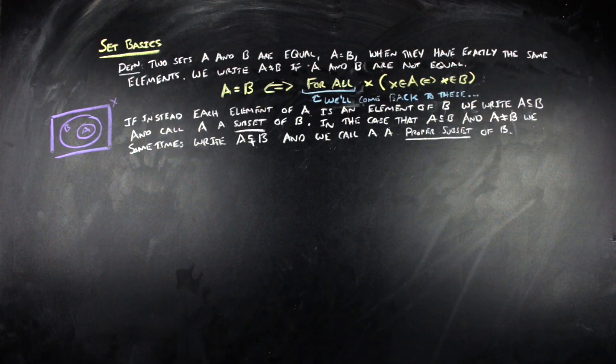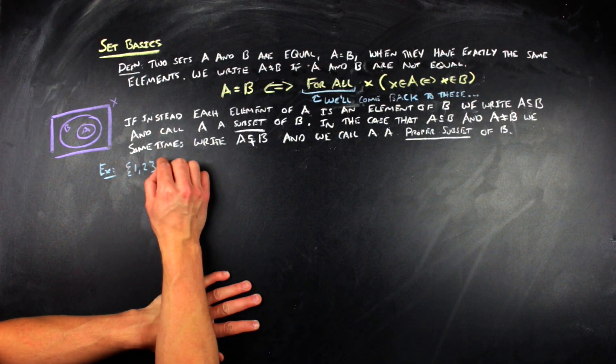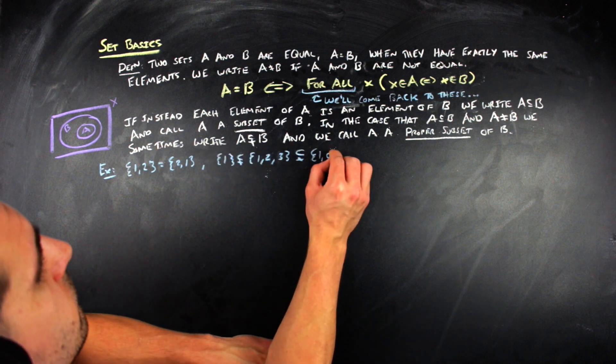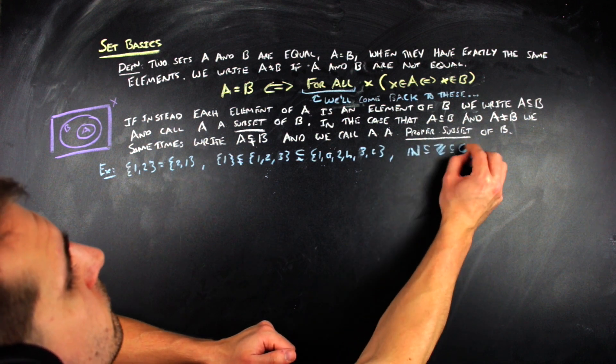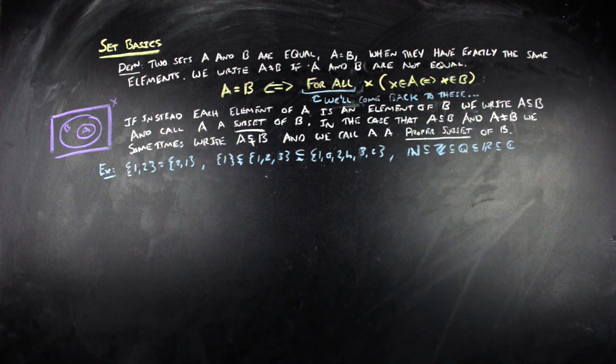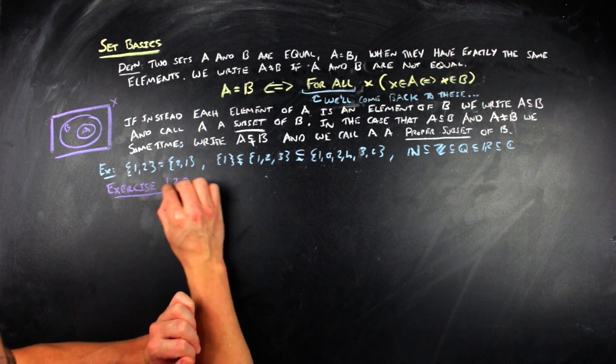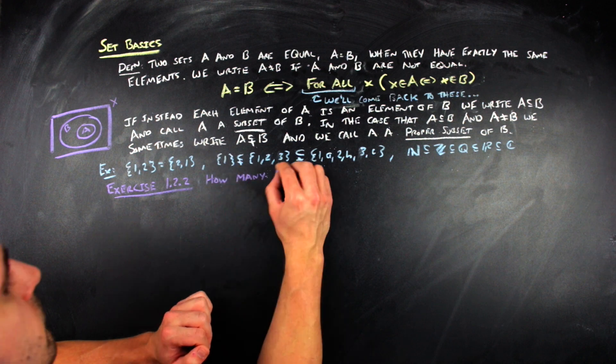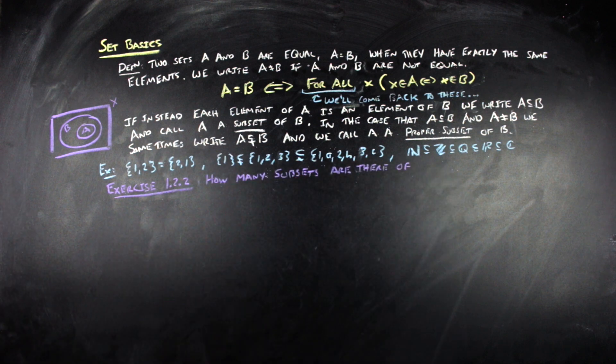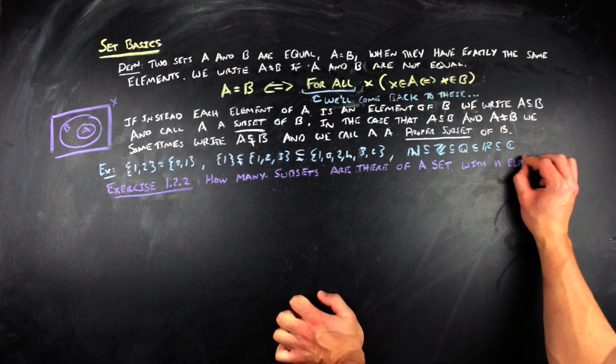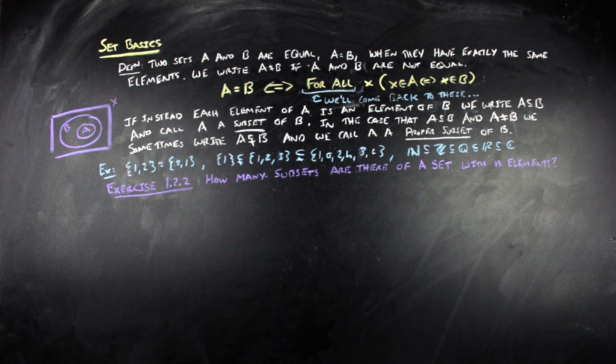So, some examples with this. First off, sets don't contain any other information beside what is in them. So, the way and order in which you write down elements does not change the set. So, for example, the set {1, 2} is the same set as {2, 1}. Another example that comes up a lot is just containment of different numbers. So, the natural numbers are contained in the integers, which are contained in the rationals, which are contained in the reals, which are contained in the complex numbers. Another natural question to ask, and this will be the next exercise, is, well, how many subsets are there of a finite set? So, if you have n elements in a set, how many subsets do you have?